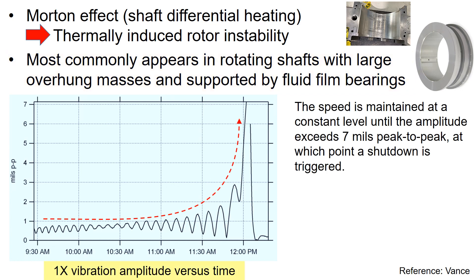The figure on the bottom shows the 1x vibration amplitude versus time. The machine speed is maintained at a constant level until the amplitude exceeds 7 mils peak to peak, at which point a shutdown is triggered.